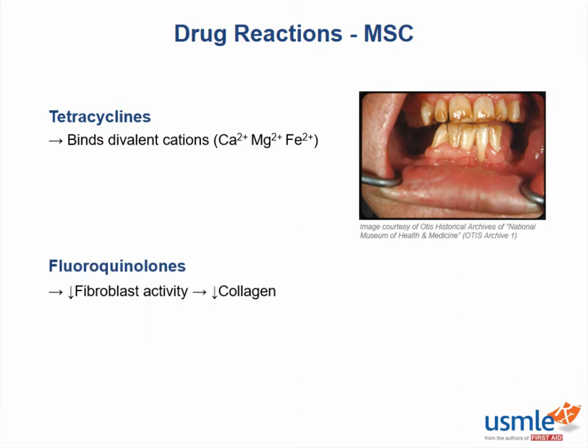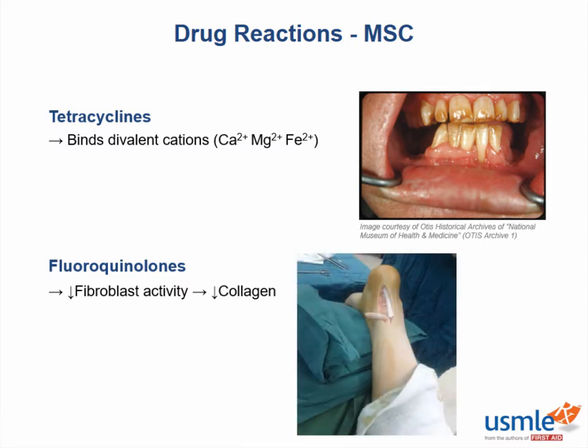Fluoroquinolones can actually inhibit fibroblasts' ability to deposit collagen, making people susceptible to tendon or cartilage weakening. Therefore, it is contraindicated to give these antibiotics to children, pregnant and nursing mothers, due to the possible cartilage damage. Also, be on the lookout for an elderly person taking corticosteroids who presents with a ruptured tendon — think fluoroquinolones.